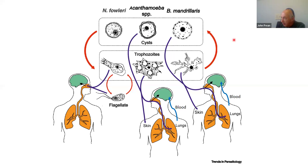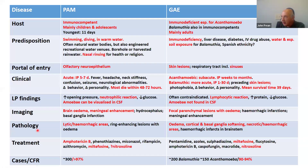For Acanthamoeba, either cysts or trophozoites are able to infect skin — which may be the primary site — or, probably more commonly, the upper respiratory tract. In some cases this may spread contiguously into the central nervous system, or via the lungs and bloodstream into the central nervous system.